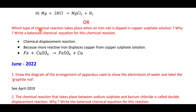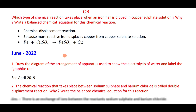When an iron nail is dipped in copper sulfate solution, it is a displacement reaction because iron is more reactive than copper — iron displaces copper from the copper sulfate solution. The equation is: Fe plus CuSO₄ gives FeSO₄ plus Cu.